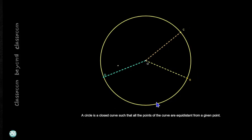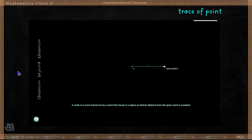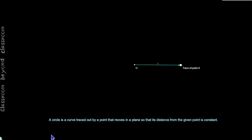This equal distance is represented by the small letter R and is called the radius of the circle. The given point from which the distance is measured is called the center of the circle. A circle is also defined as a closed curve traced out by a point that moves in a plane so that its distance from a given point is always constant.